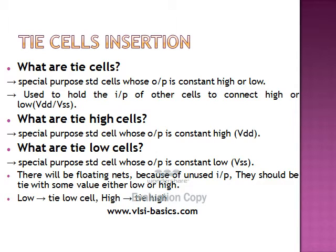What are tie-high cells? The tie-high cell is a special purpose standard cell whose output is constant high or VDD. What are tie-low cells? The tie-low cell is a special purpose standard cell whose output is constant low, that is VSS.